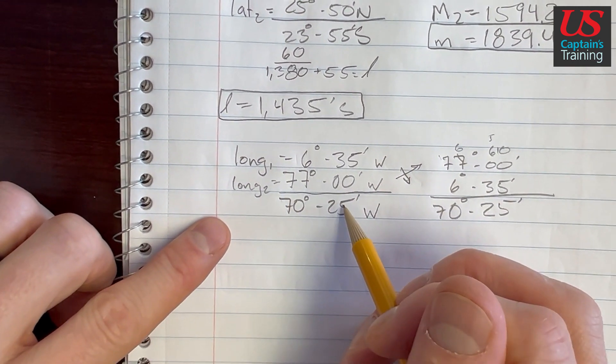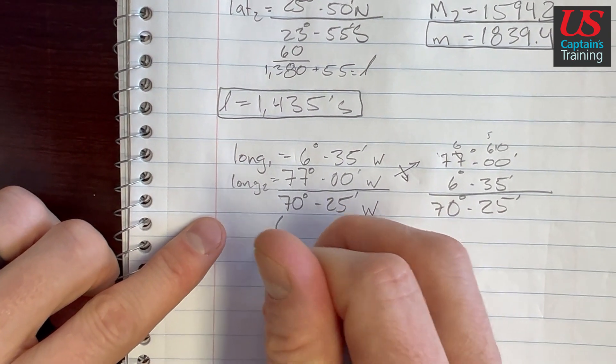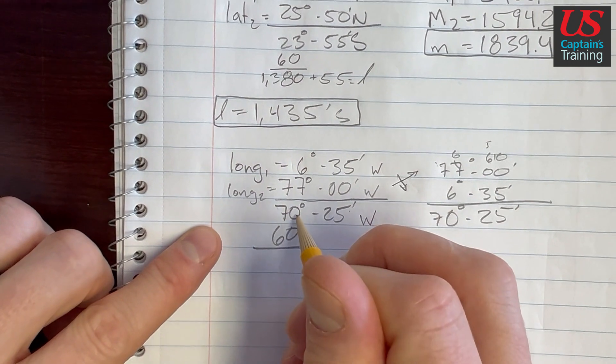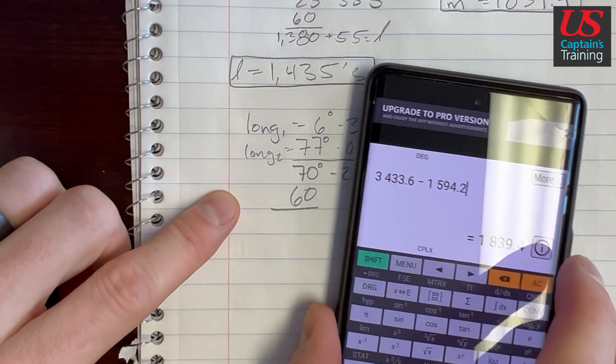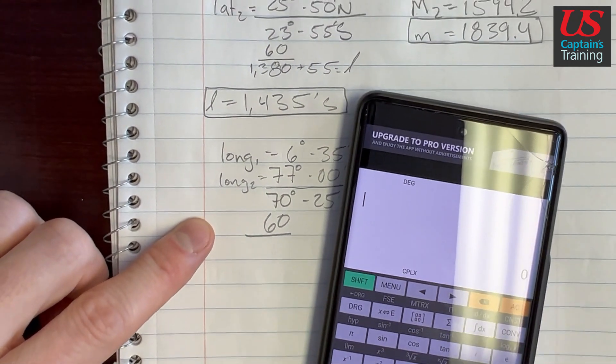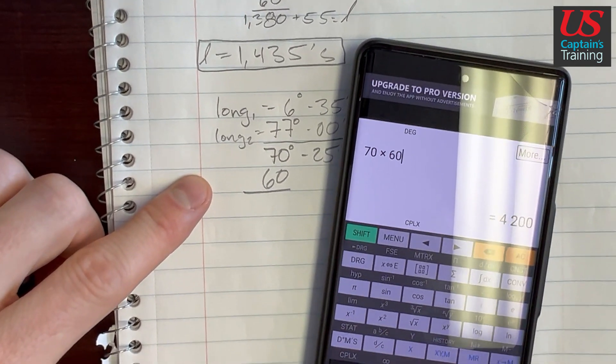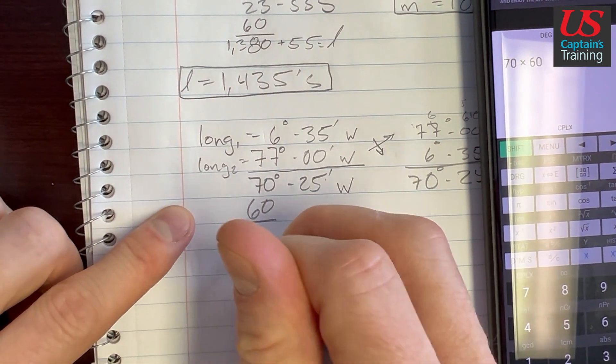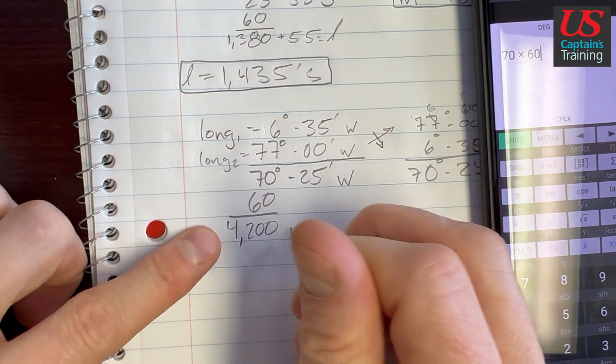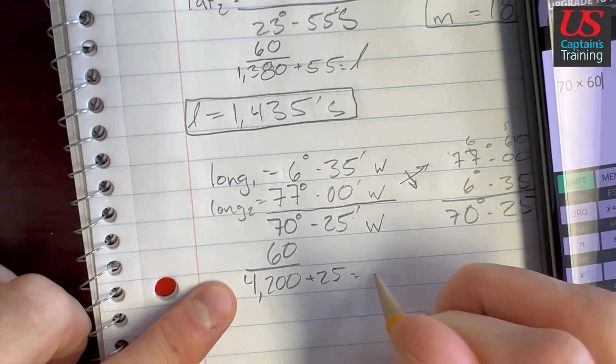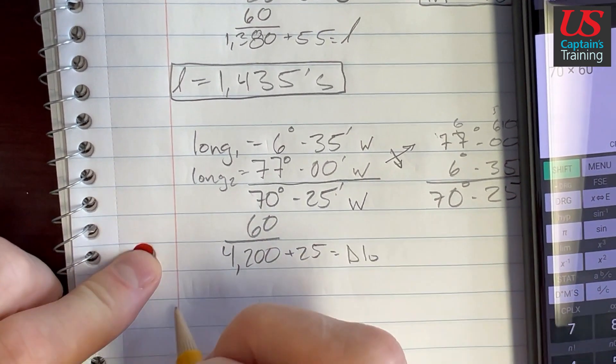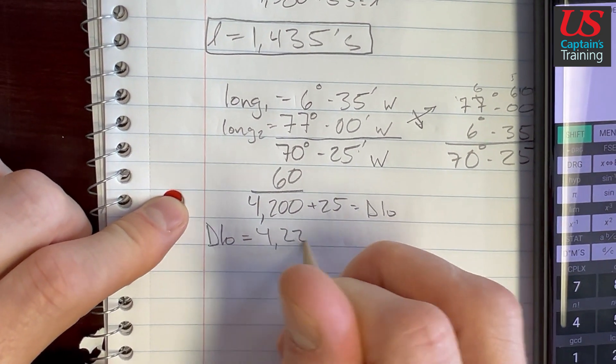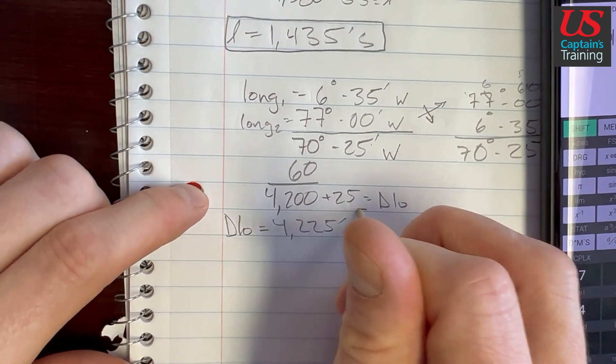We're changing these degrees into minutes times by 60 because there's 60 minutes in one degree. So 70 times 60, 70 times 60 equals 4200. 4200 plus these 25 minutes, it's going to give us our D low. So D low is equal to 4225 minutes west.